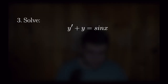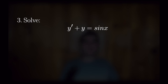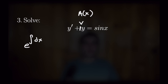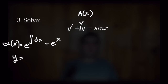For problem three, we have y prime plus y is equal to sine of x. In this problem we have a y prime and a single solitary y for a second term. You might wonder: do we not have an a of x? But we do — we can write that y as 1 times y, where 1 takes the place of a of x. Using that value for a of x, we solve for alpha of x: alpha of x is equal to e to the integral of 1 dx, which is just x. So our integrating factor is e to the x. Let's plug that into our formula.